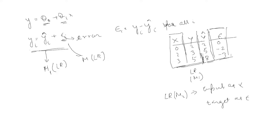In the next step, you train model M2 to predict this error itself. M2 takes input x and target as epsilon — given any x, you predict the error. Even if your first model had very high error, if M2 predicts that error perfectly, combining the two models gives something absolutely good. So in gradient boosting: M1 trains on the entire dataset, and M2 trains on x and the errors from M1.